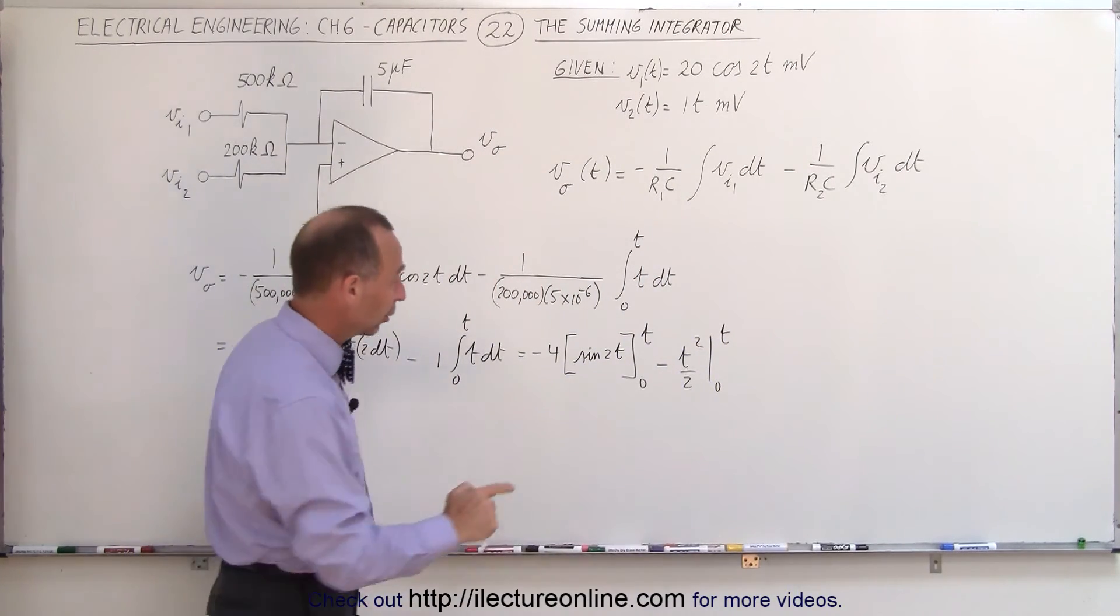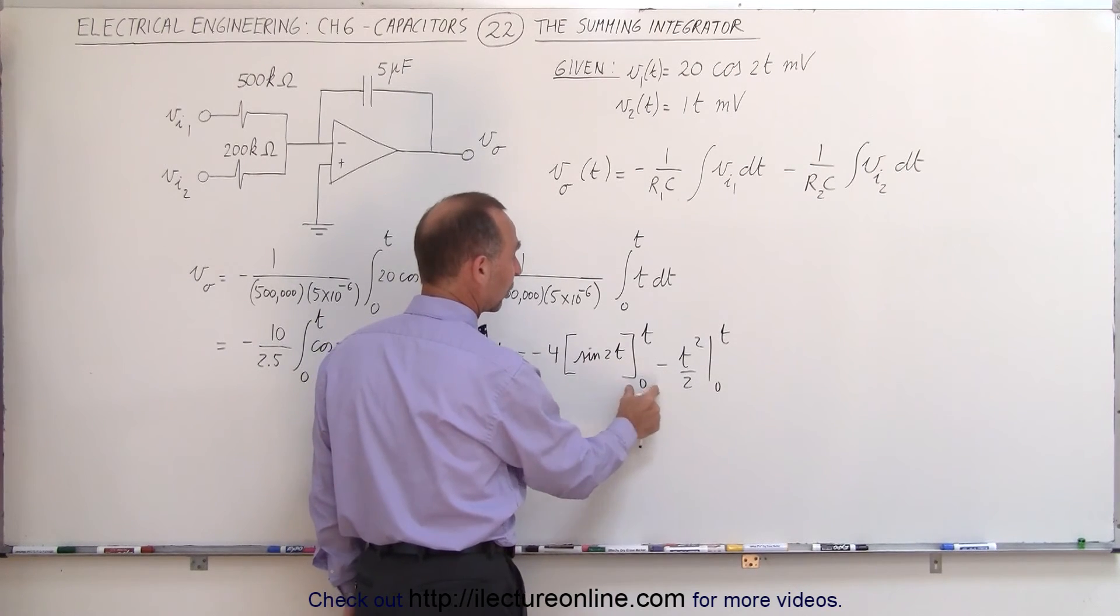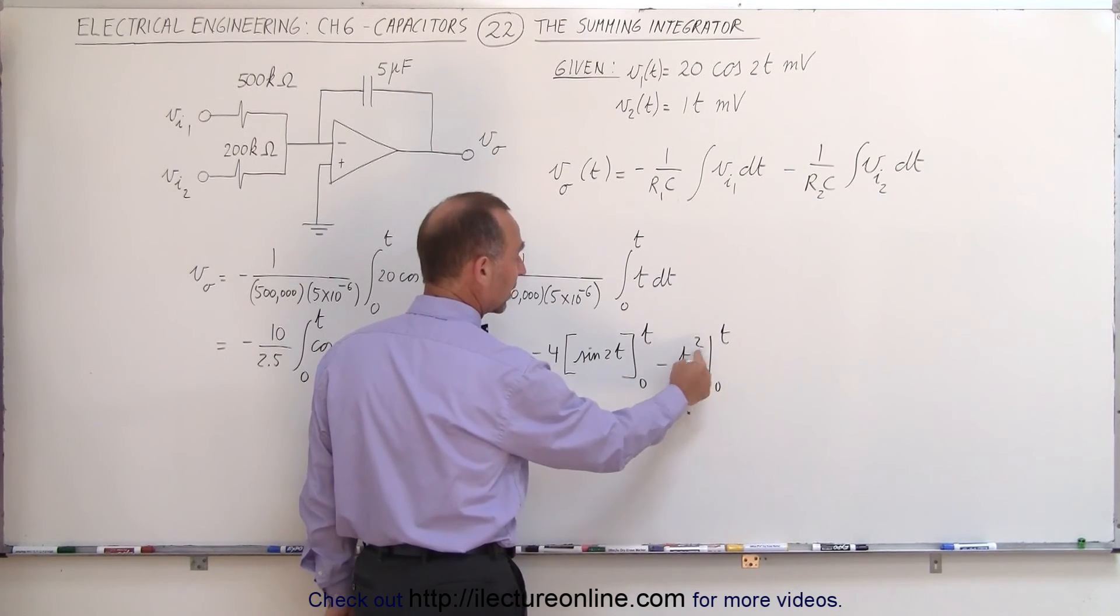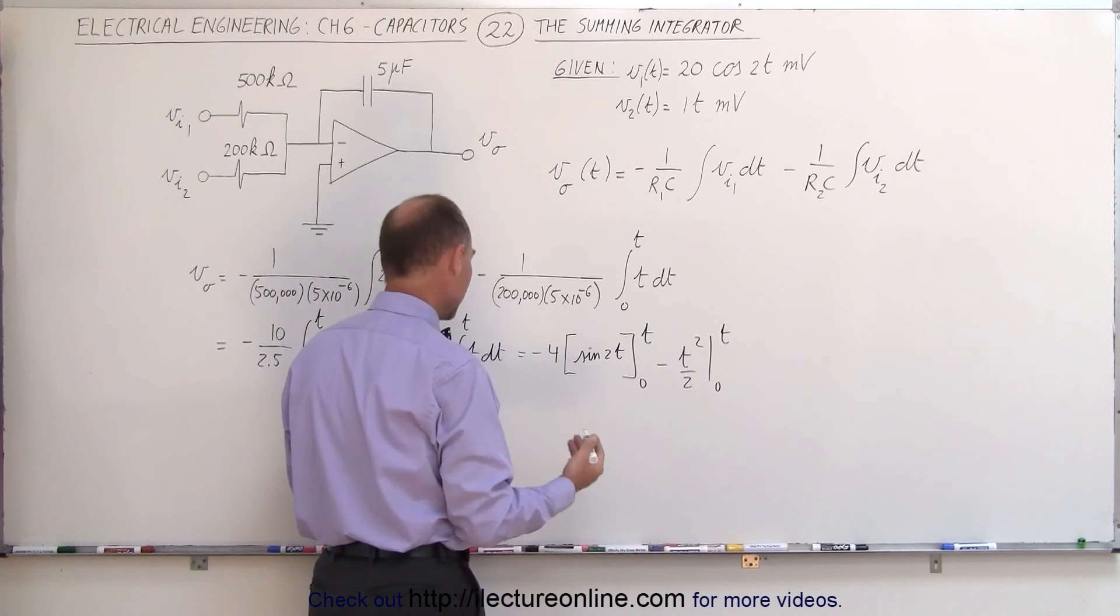Notice when you plug in the lower limit, the sine of 0 is 0, so we don't have to worry about the lower limit, and when you plug in the lower limit here, that goes to 0 as well, so we'll only keep the upper limits.